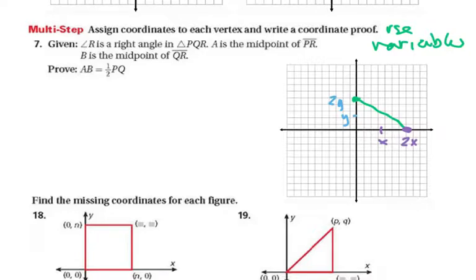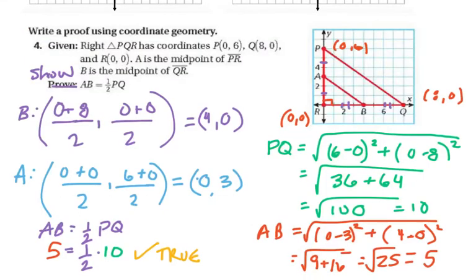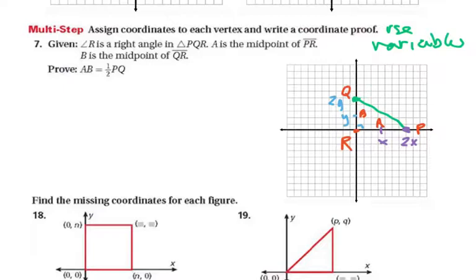They tell us R is the right angle, so A is the midpoint of PR and B is the midpoint of QR. We label: the right angle vertex is R, one endpoint is P, the other is Q, A sits between P and R, and B sits between Q and R. Now we set up the coordinates: P is at (2X, 0), R at the origin (0, 0), Q at (0, 2Y). We're going to find the coordinates of A and B.